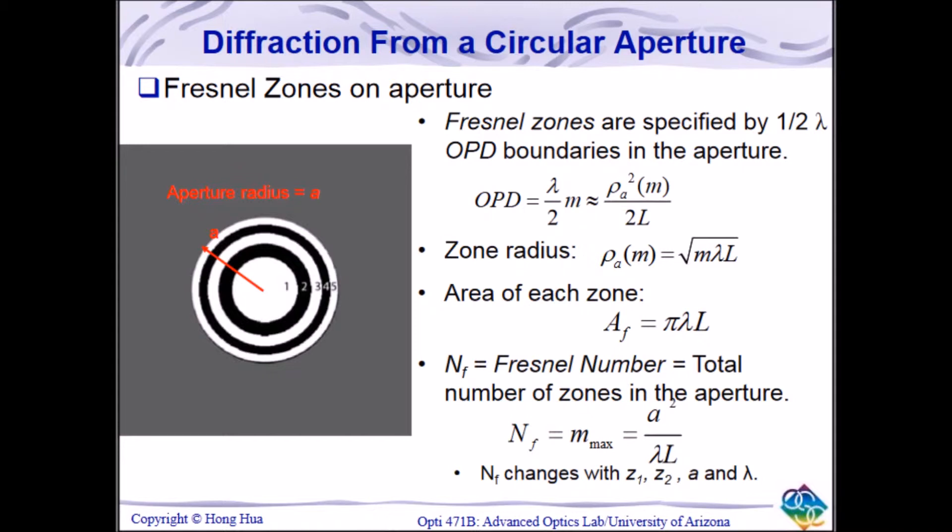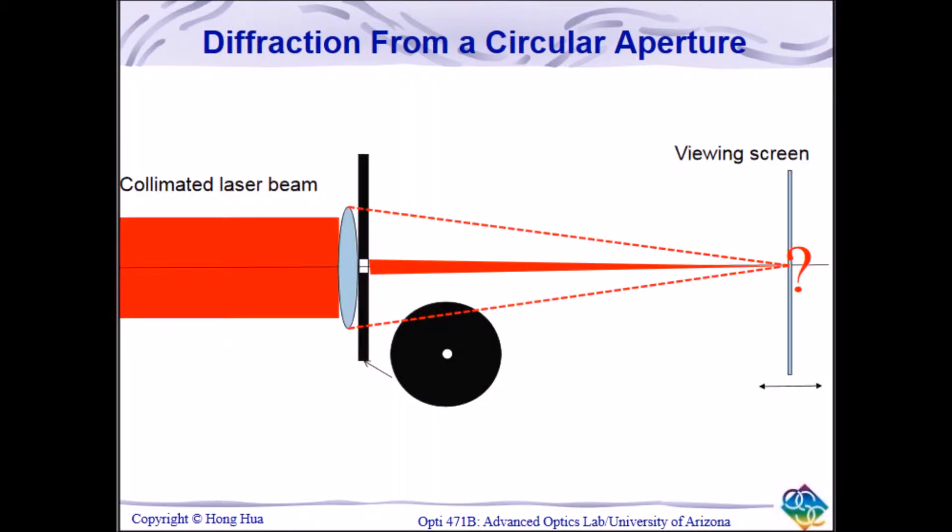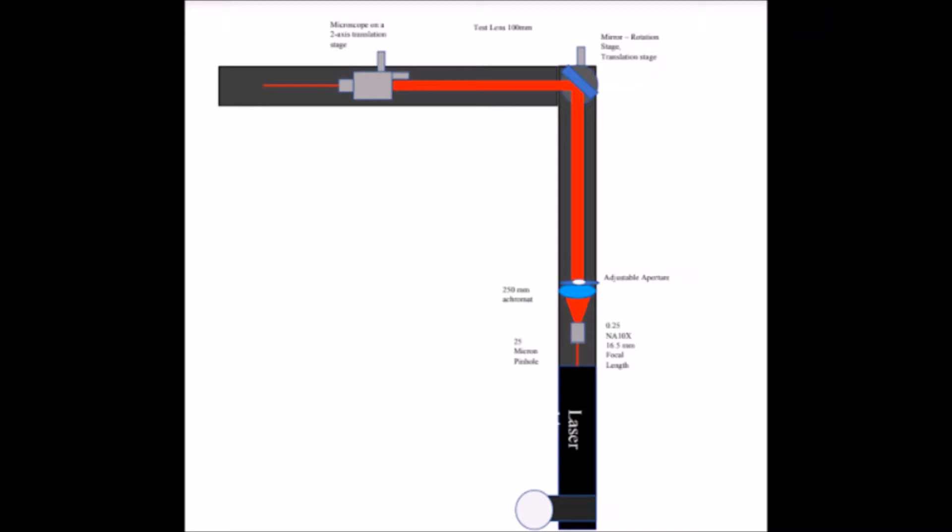Once the distance is large enough, it reaches the Fraunhofer region where the diffraction pattern appears as a Fourier transform of the aperture. In order to observe the diffraction of the collimated source in lab, an iris was inserted after the collimation lens at the beam expander, allowing us to close down the expanded beam. Using the aperture size, we calculated the distance at which we would expect to have a Fresnel number of 1, which serves as our observation point. We placed a microscope on the rail to observe the radiant spot pattern at the location of the first few Fresnel numbers.